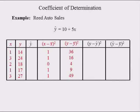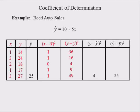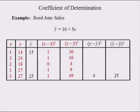The values shown in red were computed in the previous table. Recall that the fifth predicted value of y was 25; the squared deviation between the fifth observation of y and its mean was 49; the squared deviation between the fifth observation of y and the fifth predicted value of y was 4; and the squared deviation between the fifth predicted value of y and the mean of y was 25. Plugging x equals 1 into the regression equation yields 10 plus 5 times 1, which equals 15. Plugging x equals 2 into the regression equation yields 10 plus 5 times 2, which equals 20.